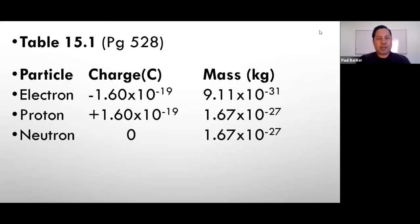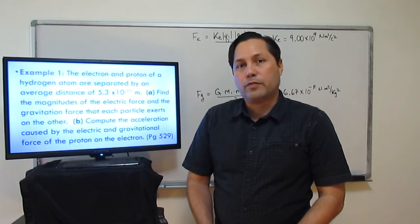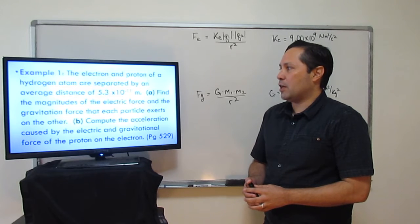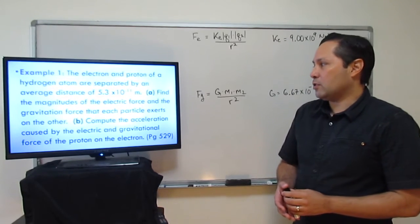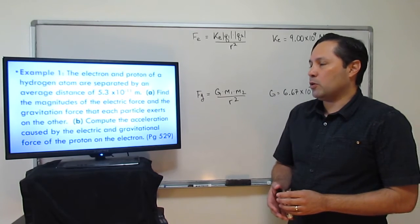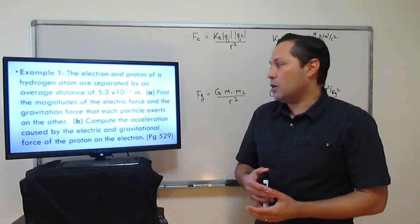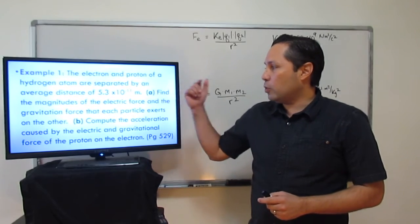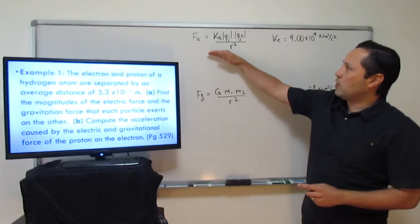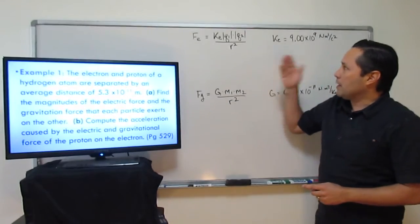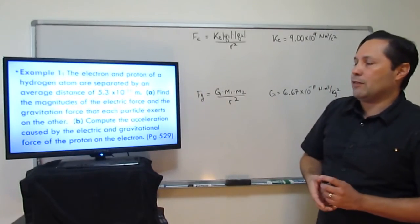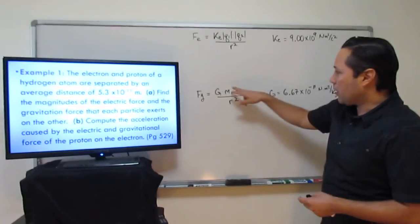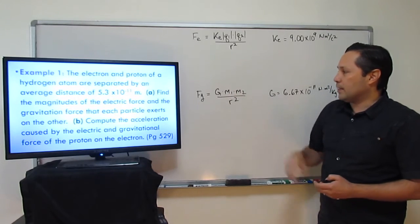Let's look at example 1. The electron and a proton of a hydrogen atom are separated by an average distance of 5.3 times 10 to negative 11 meters. Part A: find the magnitude of the electric force and the gravitational force that each particle exerts on each other. We'll use Coulomb's law for electric force and the gravitational force formula. The average distance is the same for both, 5.3 times 10 to negative 11. For the electric force formula we use the charges of the proton and electron, and for the gravitational force formula we use the masses of the proton and electron.